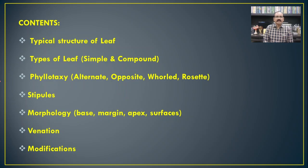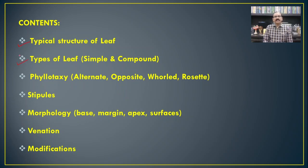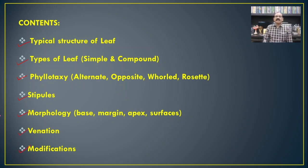Today we are going to see the different characteristics of the leaf which are important in relation to angiosperm taxonomy. The total content of this lecture will include: typical structure of leaf, types of leaf (simple and compound), phyllotaxy and its types, types of stipules, morphology of the leaf including leaf bases, surfaces, margins, apex, types of venation, and lastly the modification of leaves.